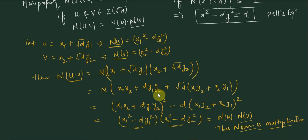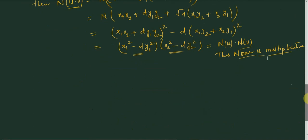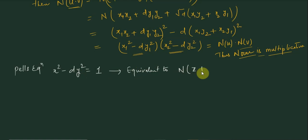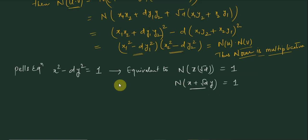Since the norm is multiplicative, this gives a good idea for finding the solution of Pell's equation. Pell's equation is of the form x² - dy² = 1, which is equivalent to the norm of the Gaussian integer equaling 1 — that is, norm of (x + y√d) = 1. So if we have a fundamental solution (x₁, y₁),